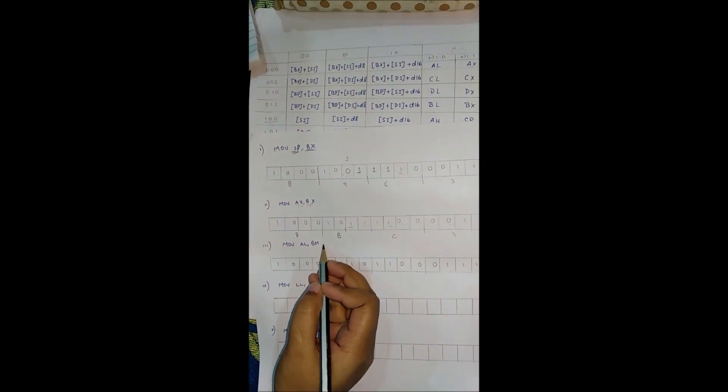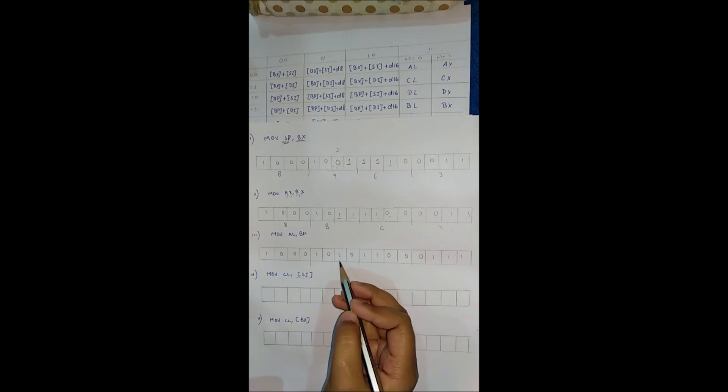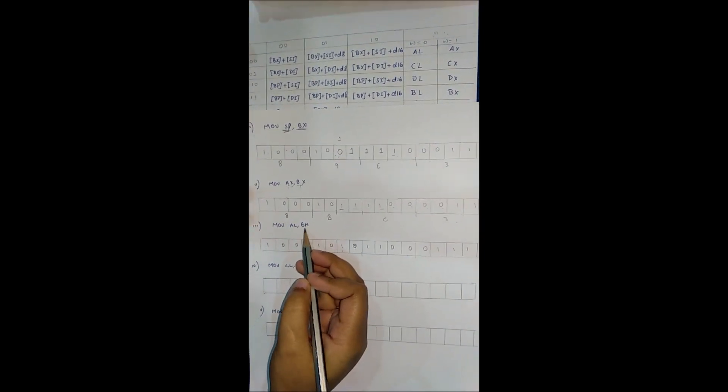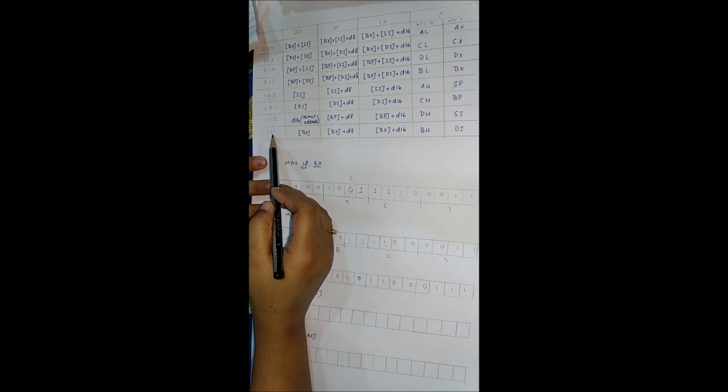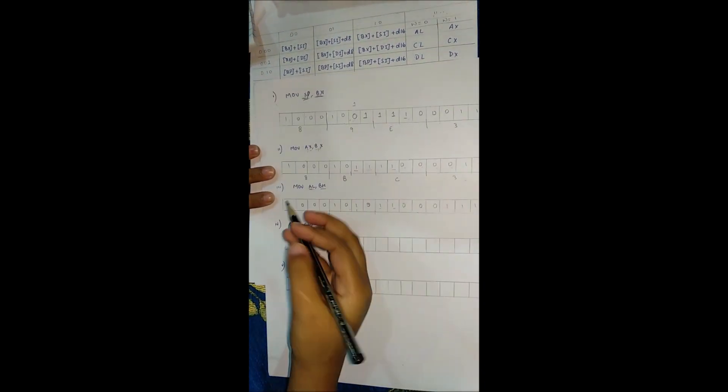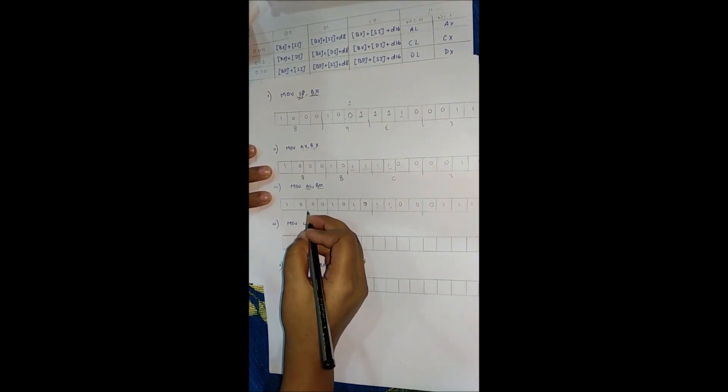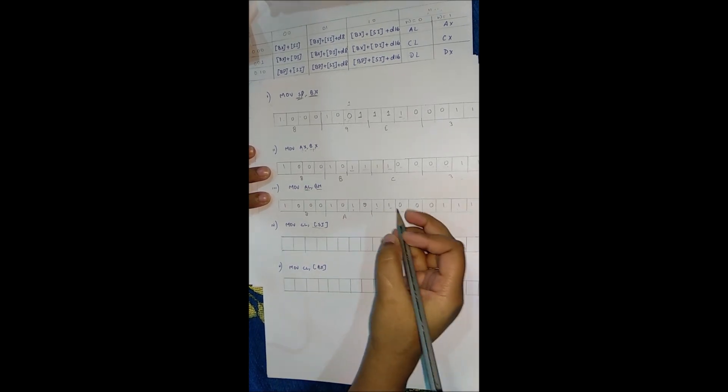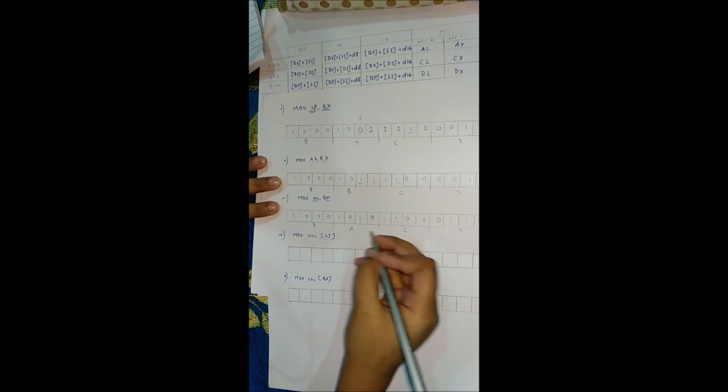Third question: MOV AL, BH. Opcode is 100010. Direction is 1 (to register). Word is 0 because we are transferring a byte — AL and BH, not AX. Mod for AL is 11. Register field for AL is 000. R/M for BH is 111. Dividing into groups of 4: 1000, 1010, 1100, 0111 — giving 8, A, C, 7. So the answer is 8AC7.